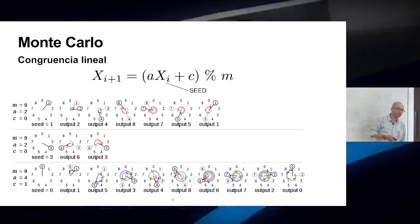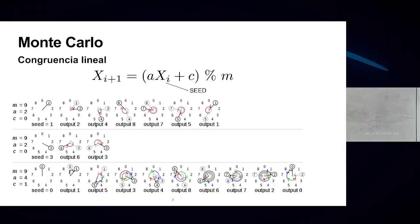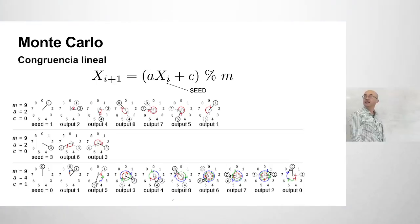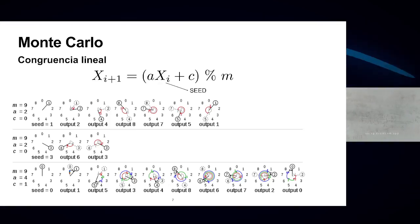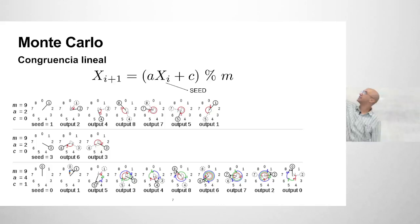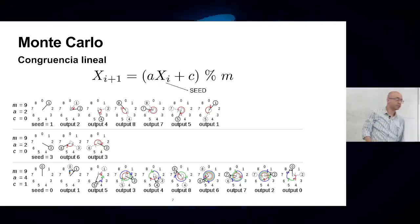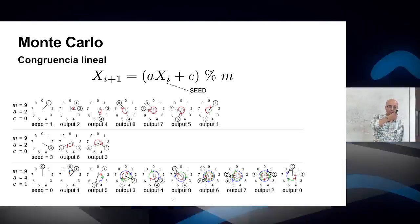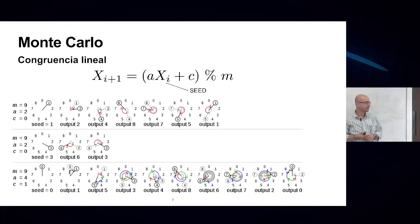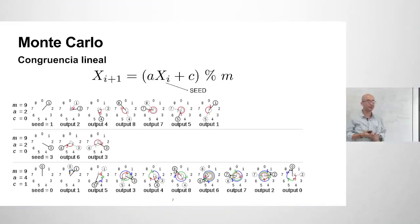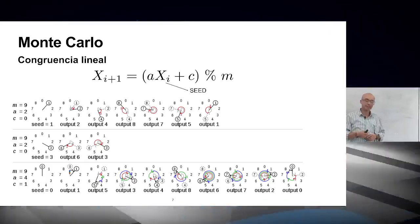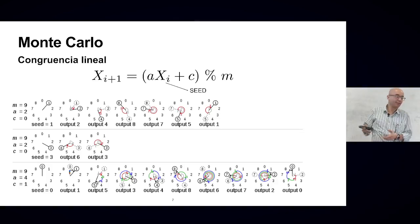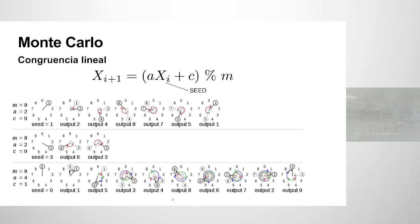For example, with m=9, a=2, c=0, and seed=1: the first number is 2·1 mod 9 = 2. Then 2·2 mod 9 = 4, then 8, then 7, then 5, then back to 1 — a cycle of only 6 numbers. This is extremely poor for a generator, as the sequence repeats far too quickly.